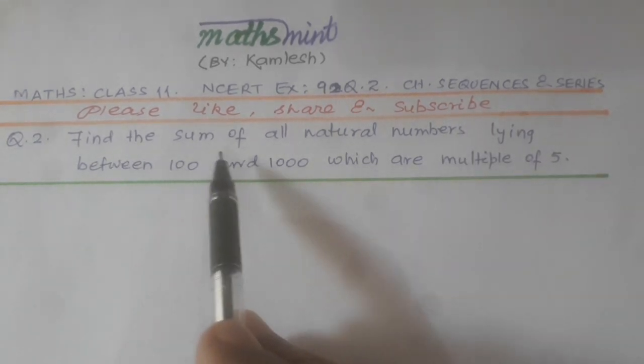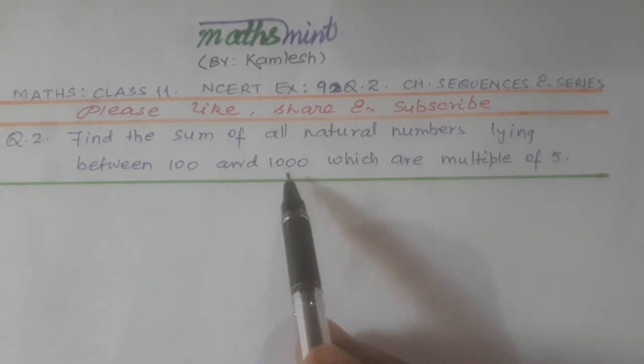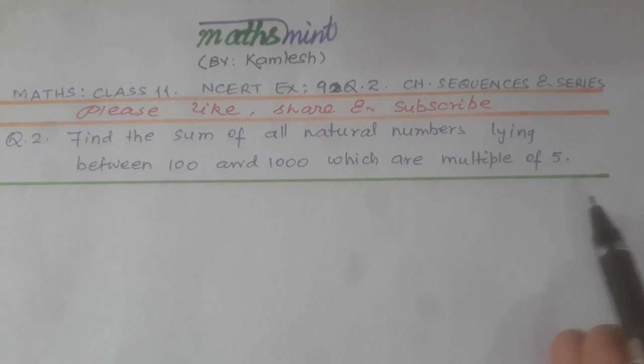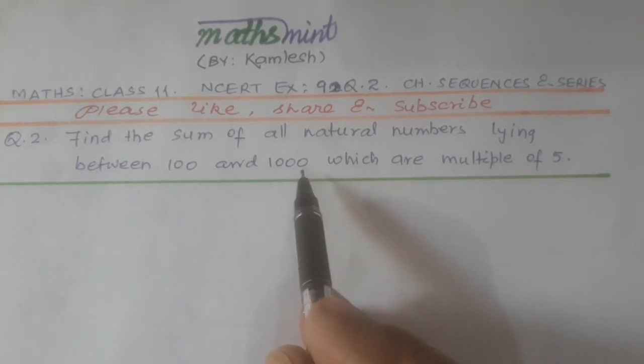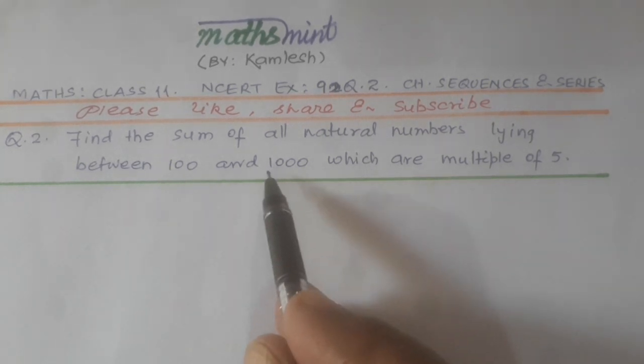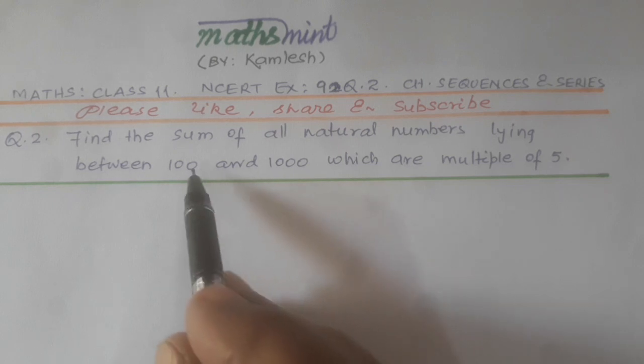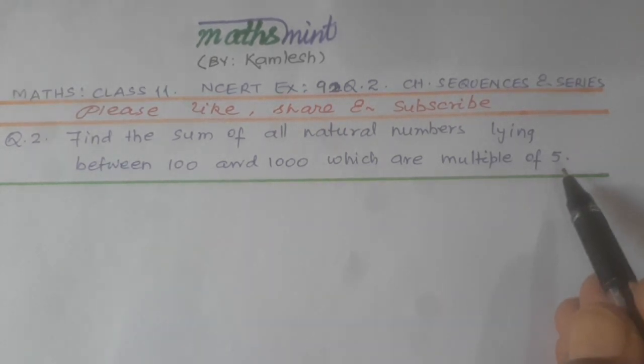The question asks: Find the sum of all natural numbers lying between 100 and 1000 which are multiples of 5. Between 100 and 1000 means we should not include 100 and 1000. In between means excluding these two, all the terms which are multiples of 5 we should consider. Multiple of 5 means those numbers which can be completely divided by 5.